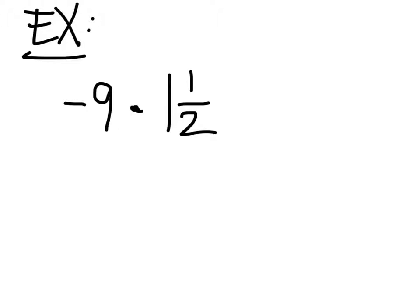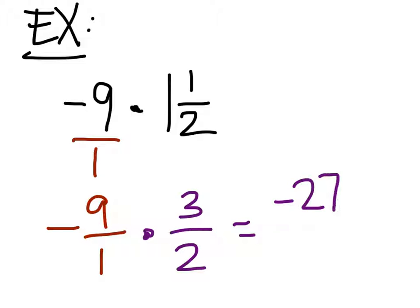All right, so let's look at a whole number example. Let's do negative nine times one and a half. Okay, that makes it easy. Well, the thing here is that negative nine, you don't see the fraction, but there is a fraction. It's my number one. Negative nine. Negative nine over one. So this would give you negative nine over one times this would now be three halves. So negative twenty-seven halves.